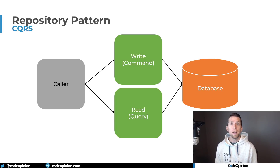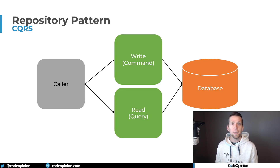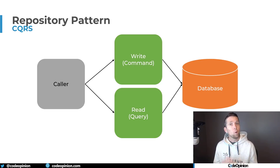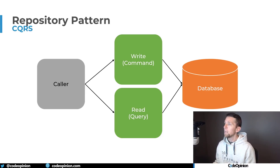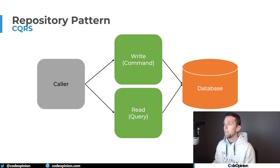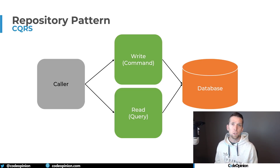I'm using CQRS to separate out the paths for reads and writes from a caller. This isn't top-level architecture, but just a decision you can make in certain places where you divide the concerns of the write path for commands and the read path for queries. This diagram illustrates it — if a caller needs to perform some state change, it goes to the command side. If it needs to read data for UI or reporting, that goes to the query side.